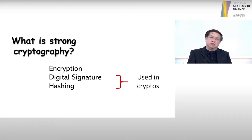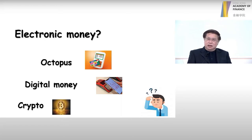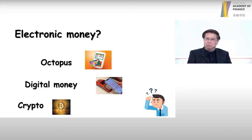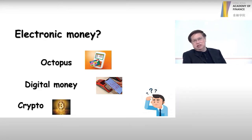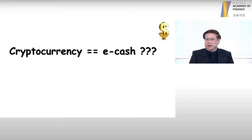When we talk about cryptos, sometimes you may ask: is it electronic money? In Hong Kong we use electronic payment such as Octopus, or recently in China, the digital RMB. Of course, in Hong Kong, people are also trading cryptos. So are they the same or are they different? Is cryptocurrency equivalent to electronic money? Is the digital RMB a cryptocurrency? The answer is no.